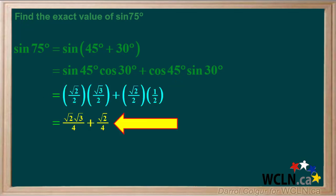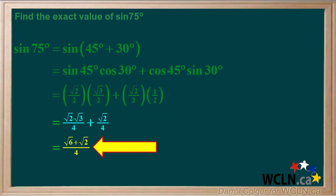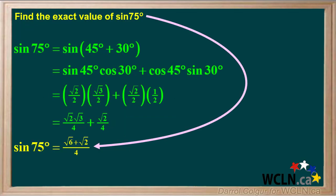Doing the multiplications in each term gives us √2 · √3 / 4 + √2 / 4. This simplifies to (√6 + √2) / 4. So we can state that the exact sine of 75 degrees is (√6 + √2) / 4. If you like, you can verify this with a calculator.